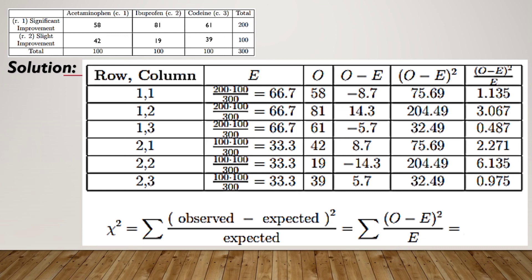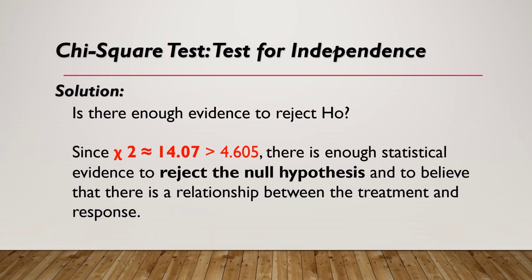The chi-square statistic is the summation of (O − E)² / E, which equals 14.07. Since 14.07 is greater than the critical value of 4.605 from the chi-square distribution table, there is enough statistical evidence to reject the null hypothesis. We conclude there is a relationship between the treatment and the response — they are dependent on each other. That is the end of our discussion about the chi-square test.